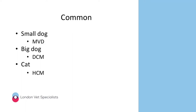Essentially, if it's a small dog with heart disease — a dog you can pick up — it probably has mitral valve disease. If it's a big dog you can't pick up, it's probably got DCM. And if it's a cat, it's probably got HCM. That doesn't apply universally, but in the main those are the ones we'll see most commonly.